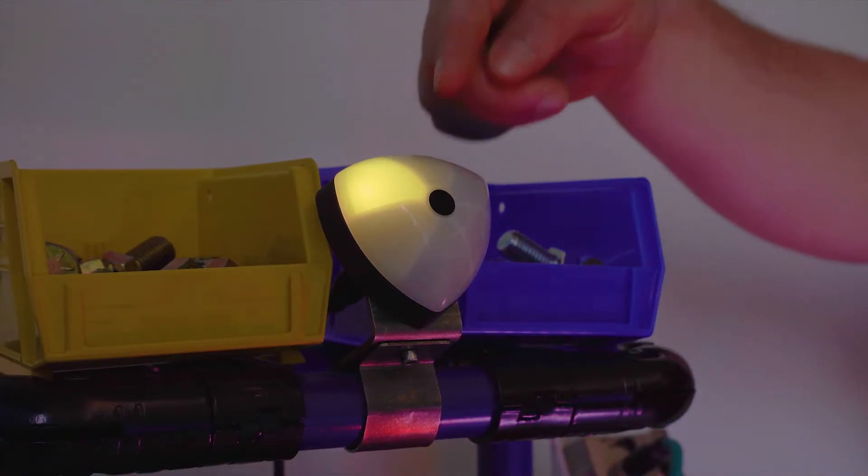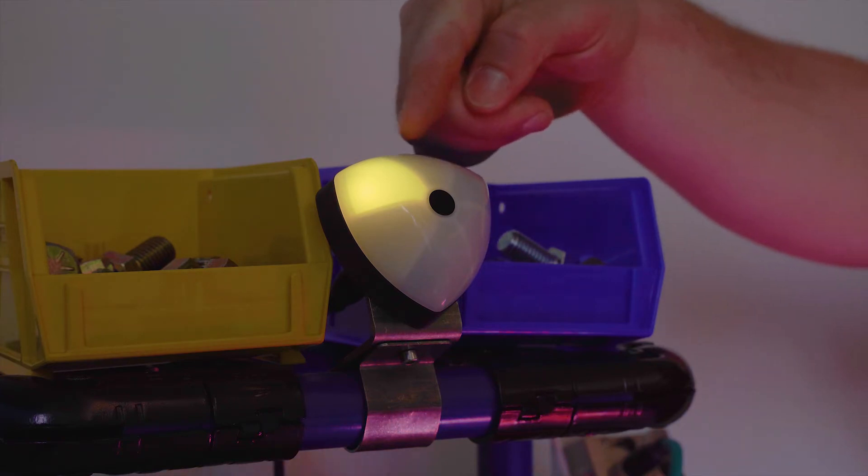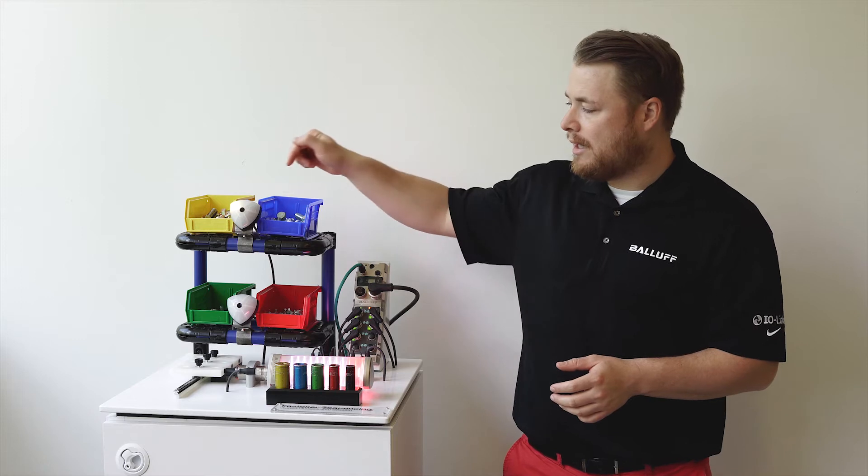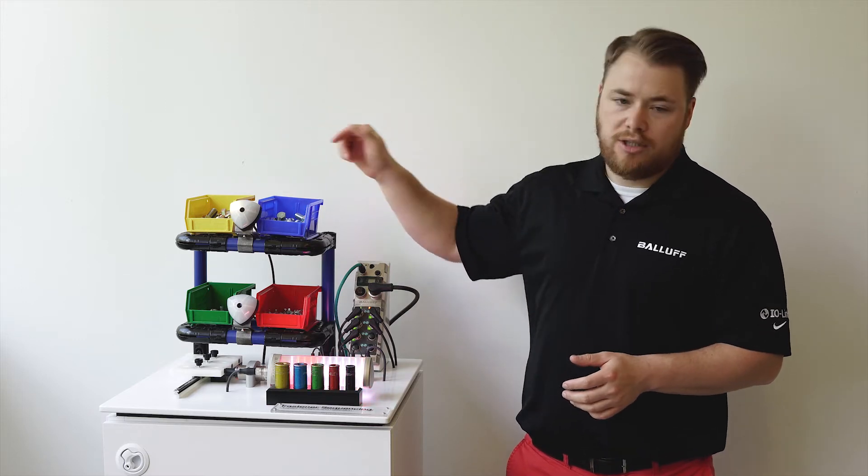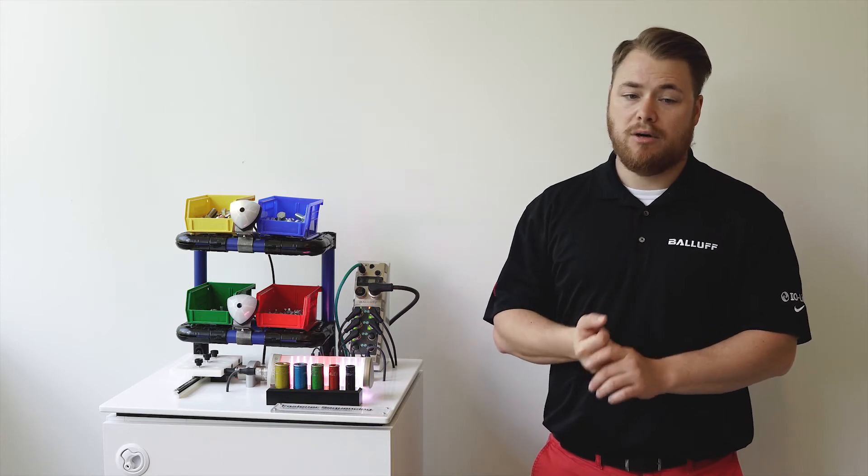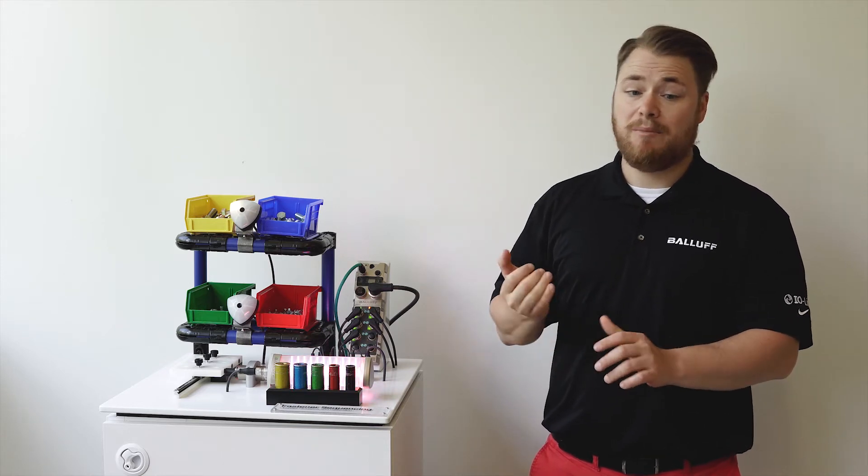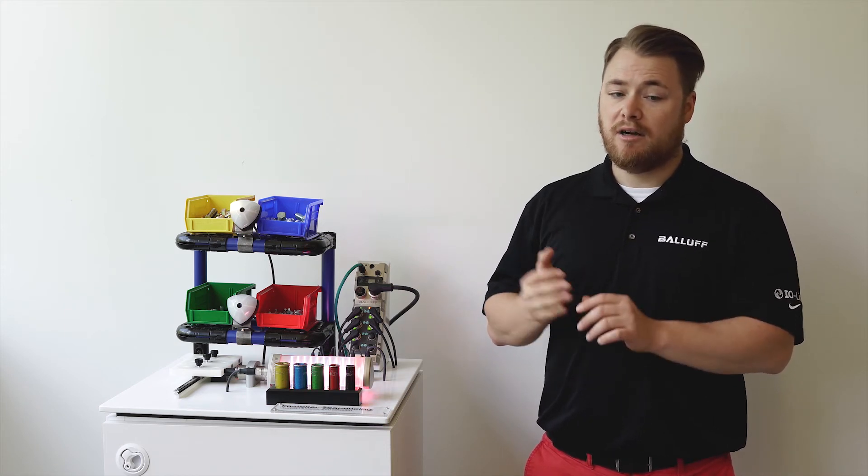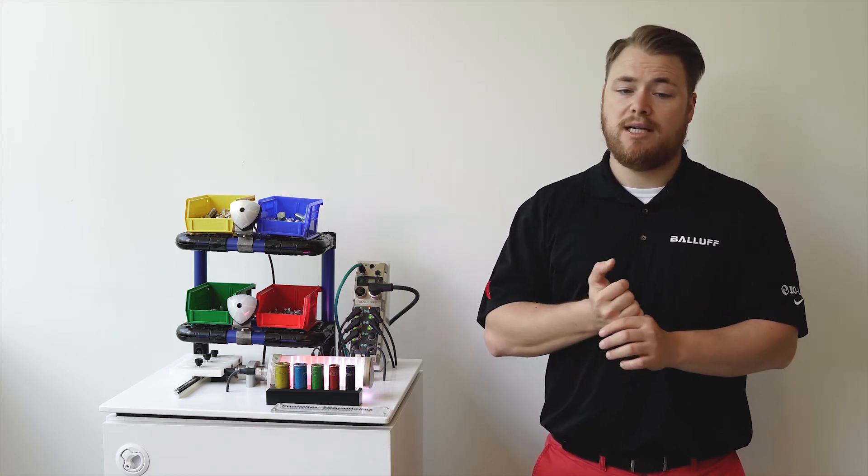As you can see, the smart light indicator is now directing me to the yellow bin, giving me the color and direction that I need to pick from. These smart light indicators can be programmed to show different colors and different blinking speeds of each segment. There are many different operating modes that these come in.